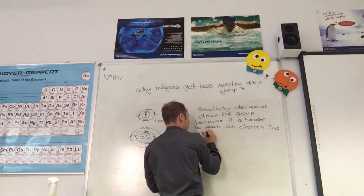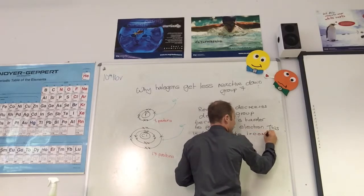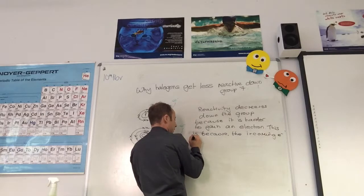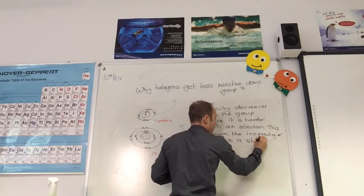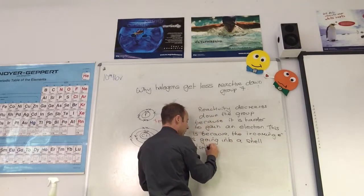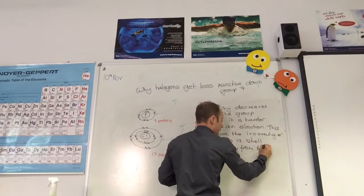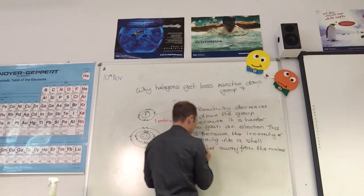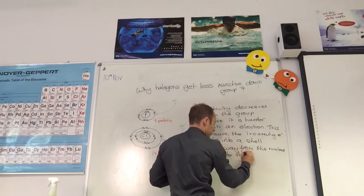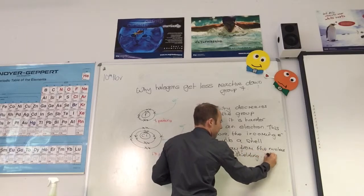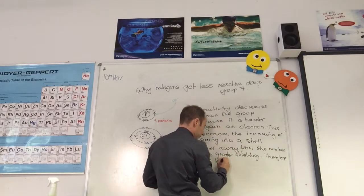This is because the incoming electron is going into a shell further away from the nucleus, and there's greater shielding. Therefore, it is less attracted by the nucleus.